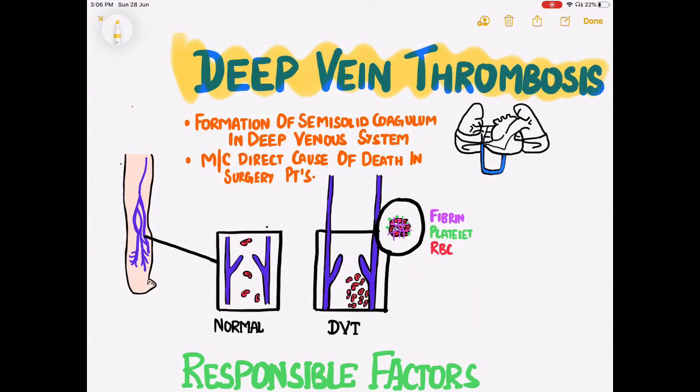Deep vein thrombosis is the formation of a semi-solid coagulum in the deep vein system. It is the most common direct cause of death in surgery patients.